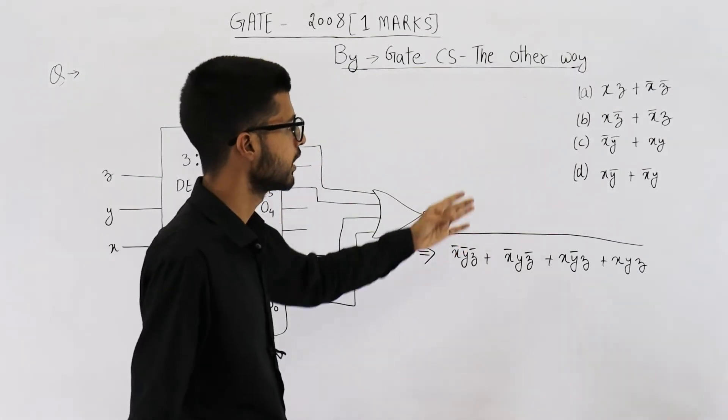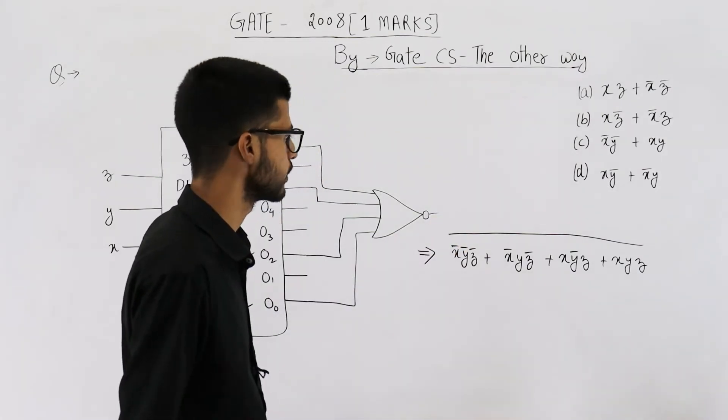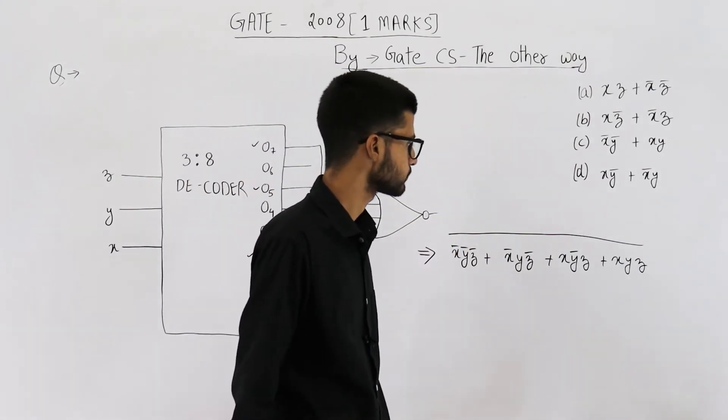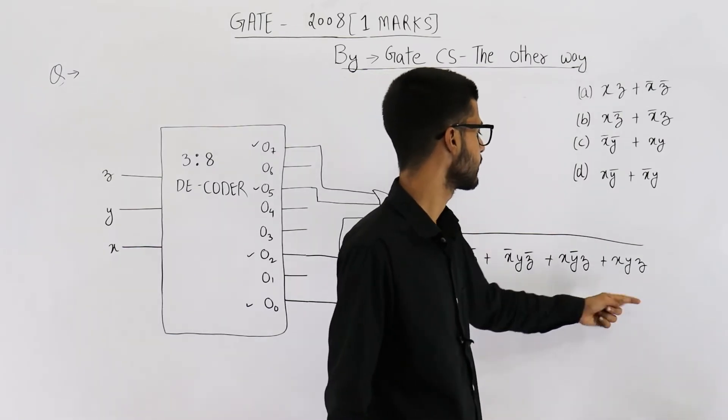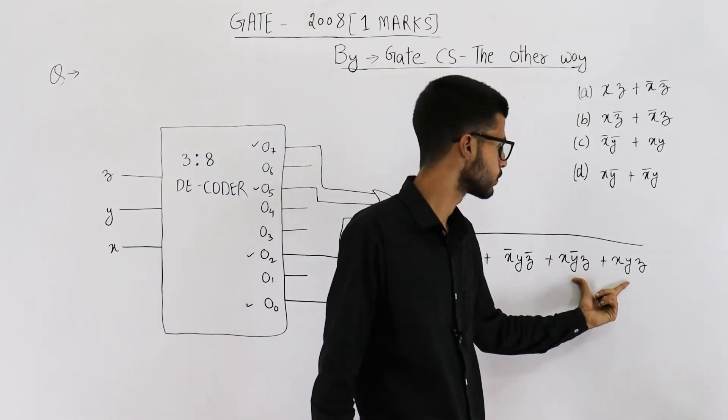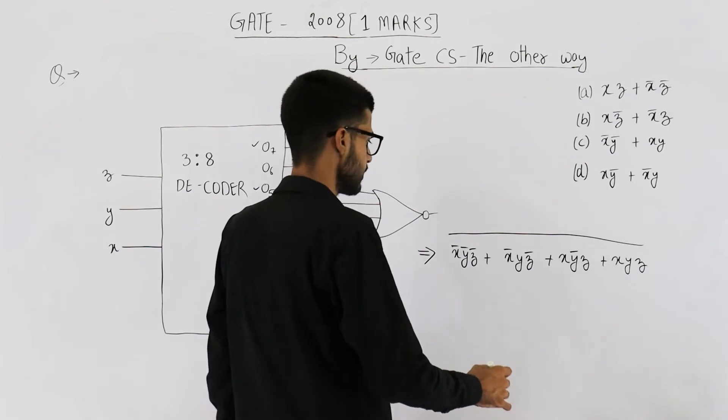Now we need to simplify it and choose one of the four options. You can see x and z can be taken common from these two terms. Let us take x and z common.